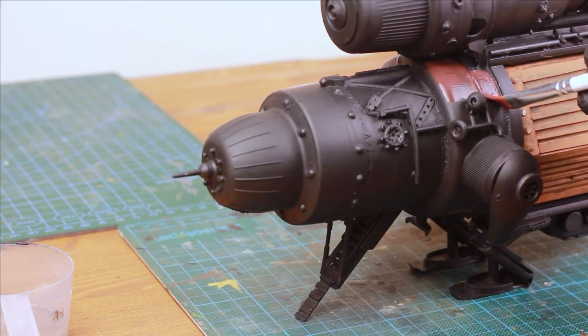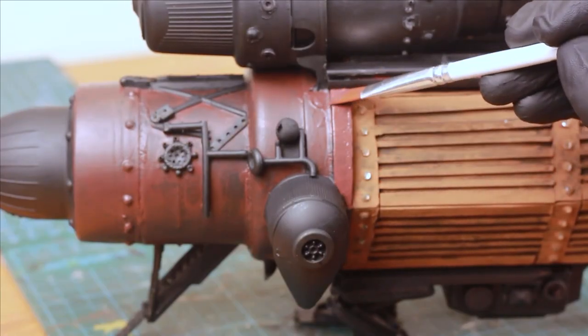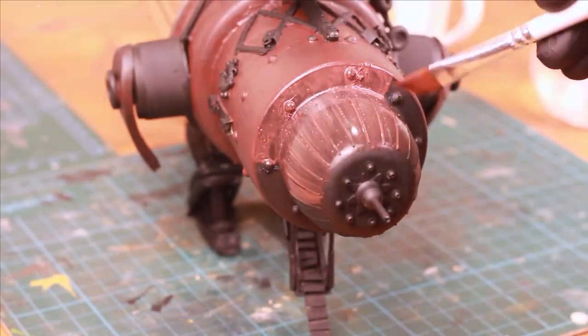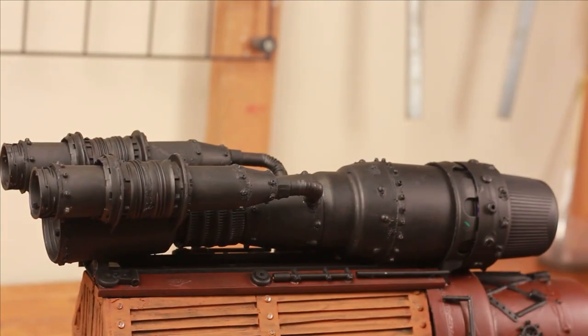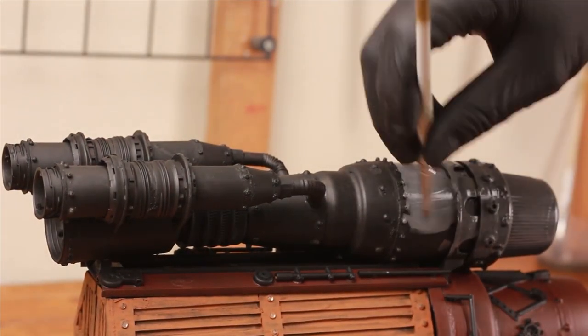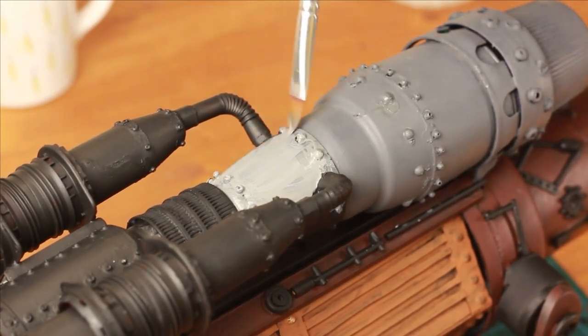For the ship's color, I picked up Vallejo's black red. For the rocket part, I wanted it to look like it can be and was replaced a while ago and kept its color different from the rest of the ship.